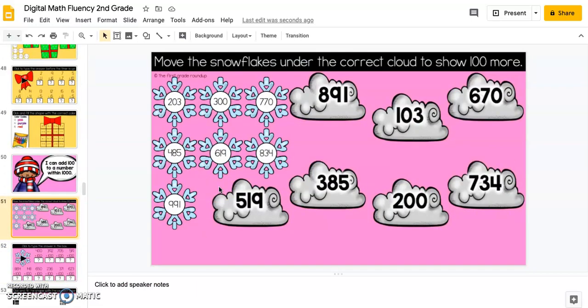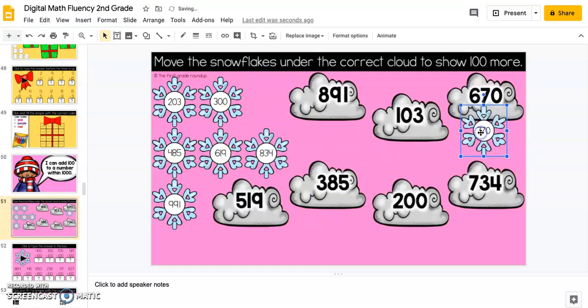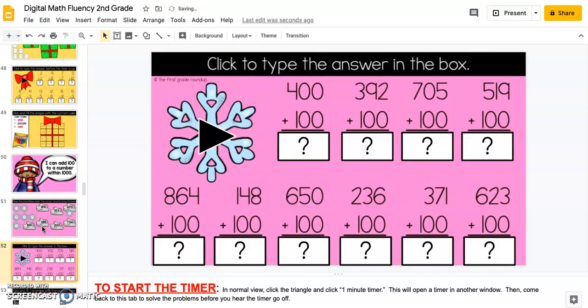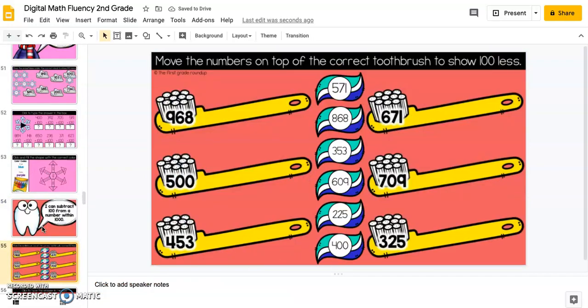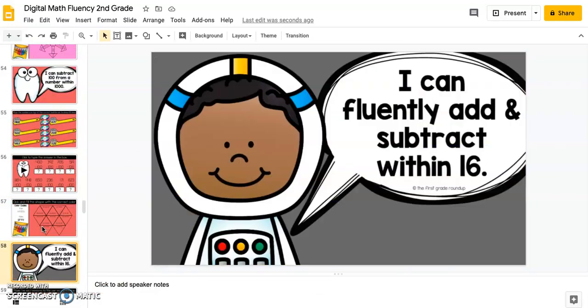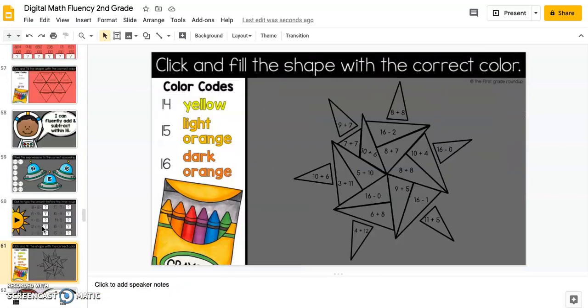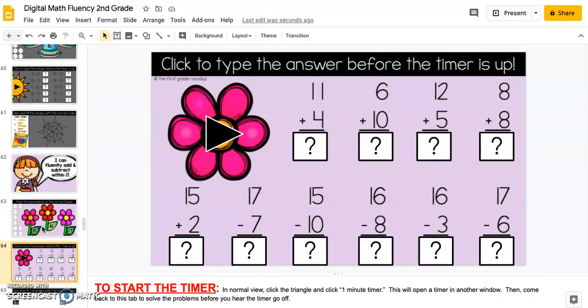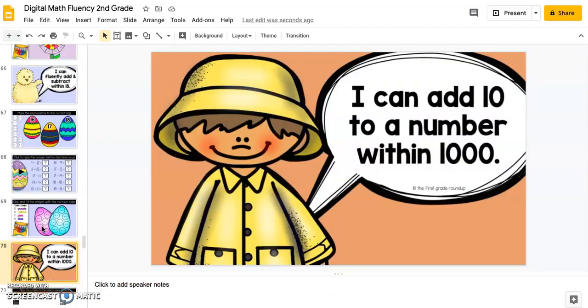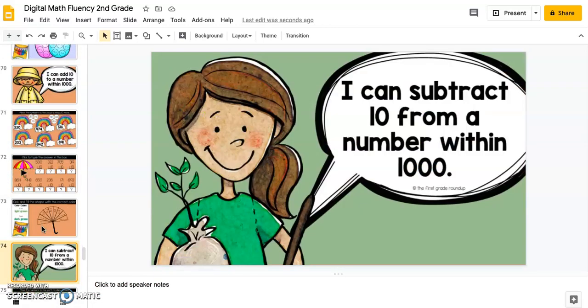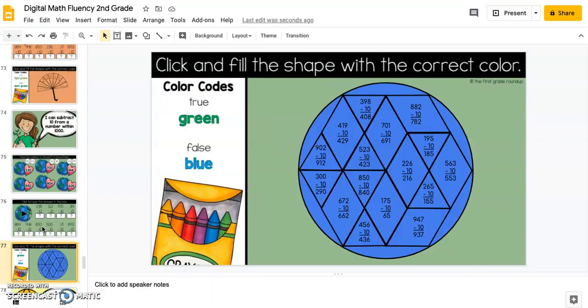On this one, they're adding and subtracting a hundred or ten. They'll just click and drag the snowflake to show a hundred more, and then this one is subtracting ten or a hundred more. Adding and subtracting ten more.